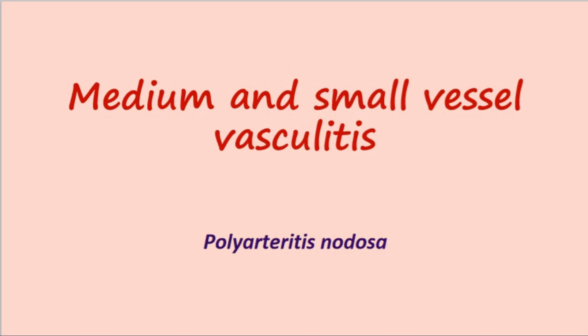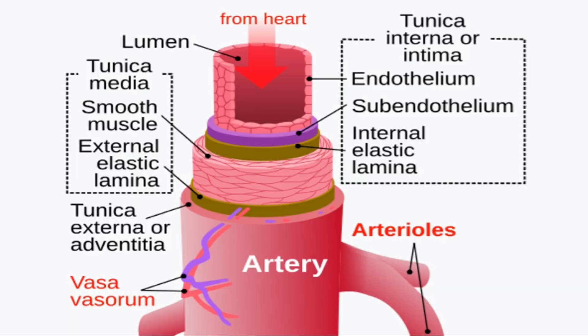Let's begin with medium and small vessel vasculitis. It would be a great idea to review the very basic histology of the arterial wall. The first innermost layer is the tunica intima, which is the first layer on the luminal side, made up of endothelial cells. Next we have the tunica media, which is made up of smooth muscle cells, fibers, and elastic tissue.